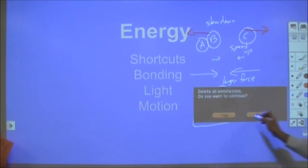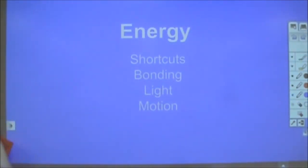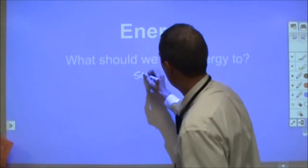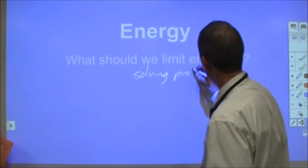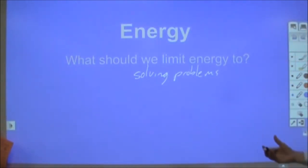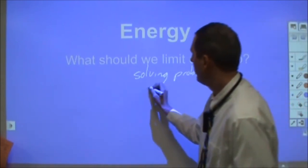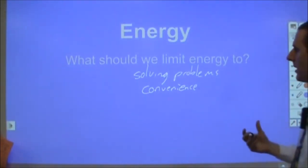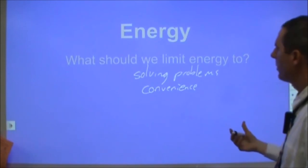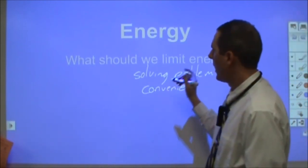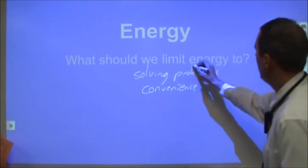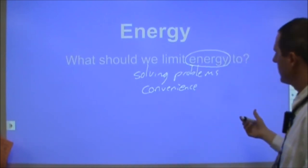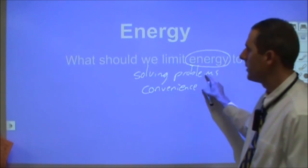Using energy as a shortcut limits how much we can understand, and it allows us to not expose things we don't understand. We should limit energy strictly to solving problems as a convenience. We should constantly be working to undermine the idea that energy is a thing — it's a convenience, a mathematically human-defined quantity, not something that actually exists. We don't have an energy crisis — we need more electricity produced, we need more things that can produce electricity. We need to lose the idea that energy itself is a tangible thing; it's merely a construct, a model for how we can solve problems.